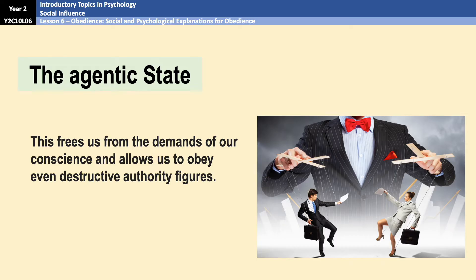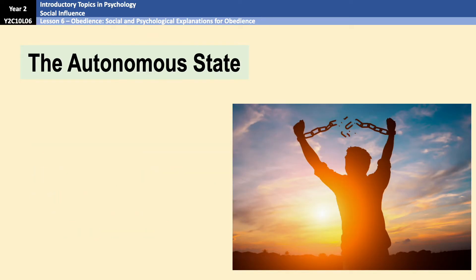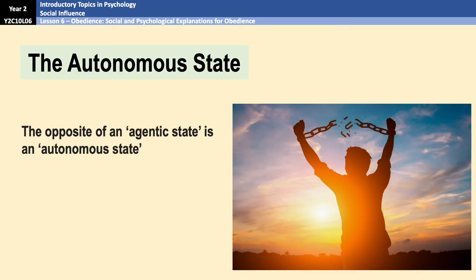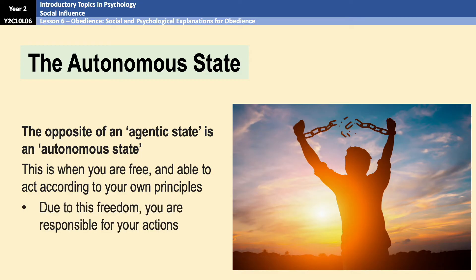Being in the agentic state frees us from the demands of our conscience and allows us to obey even when the actions would generally go against our morals or values. Interestingly, people in the agentic state can act against their conscience while still knowing what they're doing is wrong — they still feel a degree of anxiety or guilt, but they feel powerless to disobey. The opposite of the agentic state is the autonomous state, where you are free to act according to your own principles, morals, and values, and you feel responsible for your actions because you feel in control.